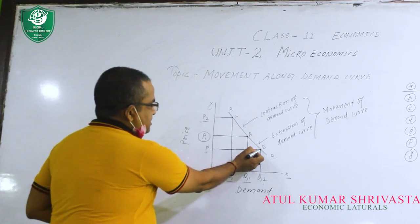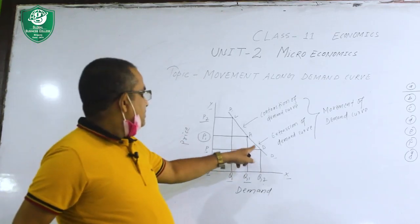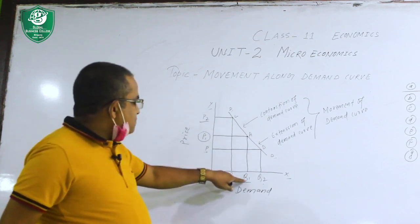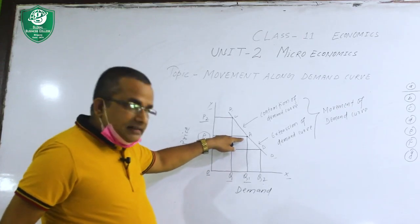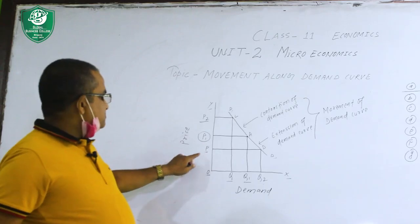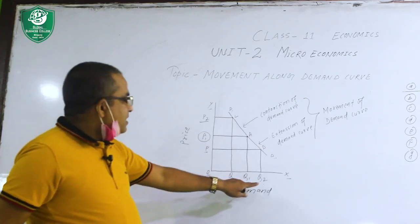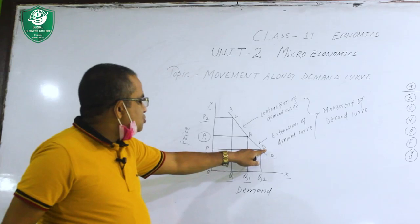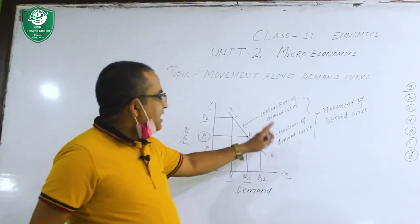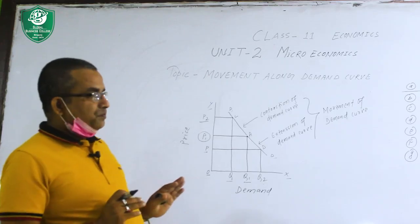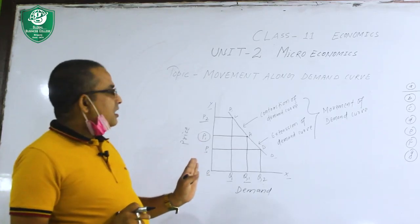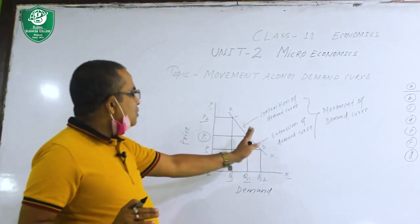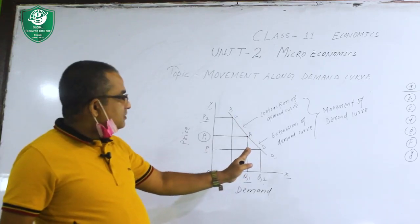When price was P1, demand was Q1 and the demand curve was at point A. When price decreased to P, demand increased to Q2 and the demand curve moved from point A to point D. This is technically called extension of demand curve. So the demand curve moving upward is called contraction of demand curve, and moving downward due to decrease in price and increase in demand is called extension of demand curve.